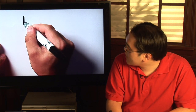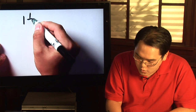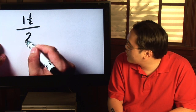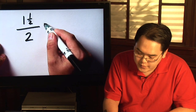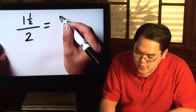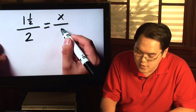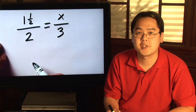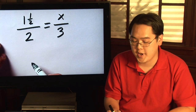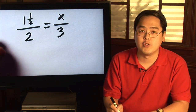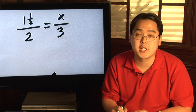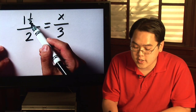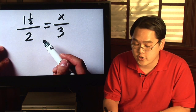Suppose you have one and a half over two equal to x over three. Now obviously you have a mixed number in the form of one and a half. You definitely don't want to solve it with it in mixed number form — you definitely want to turn this into an improper fraction.